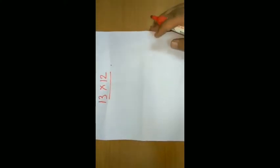Consider one example: 13 into 12, how to multiply it with the Japanese method. It is very easy. For that you should have one piece of paper.